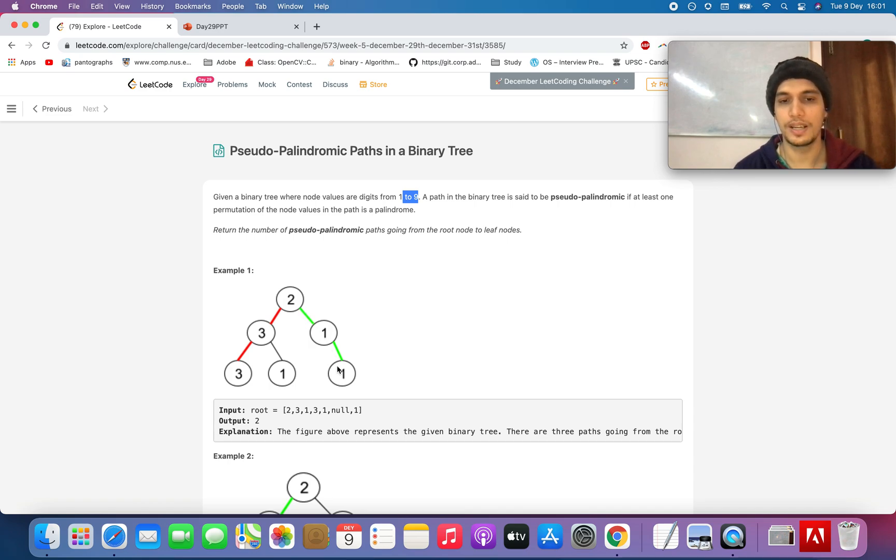Similarly, 2, 1, 1 can be reordered as 1, 2, 1 - it is again a pseudo-palindromic path because you can generate a palindromic string out of it. The total number of such occurrences is what you need to identify in this question.